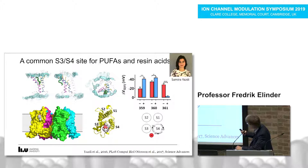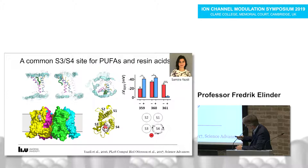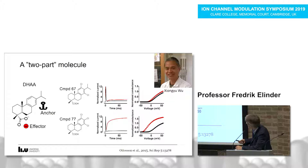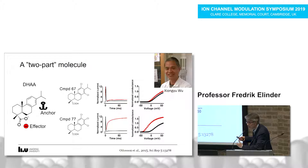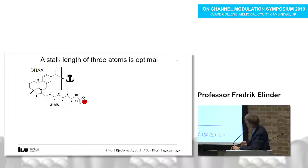Depending on which side of S4 the charged amino acid residue was placed, we got opposite effects — comparing positive versus negatively charged residues. This strongly supports an electrostatic mechanism where S4 rotates during the last opening step. Our chemist has made around 200 compounds. By making very minor modifications — changing an isopropyl group to a chloride — there is a massive change in ion channel opening and shift of the GV curve.